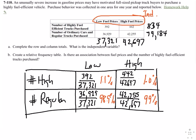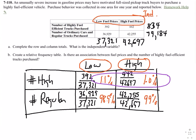Now the tricky part: I would have assumed that people would buy more energy-efficient cars when fuel prices are high. But according to this chart, for both low and high fuel prices, only about 1% of the cars and trucks purchased are high fuel-efficient. So it doesn't seem to matter whether fuel prices are low or high — people buy about 1% either way. We would say there is no association between those variables; these numbers would have to be different for there to be an association.